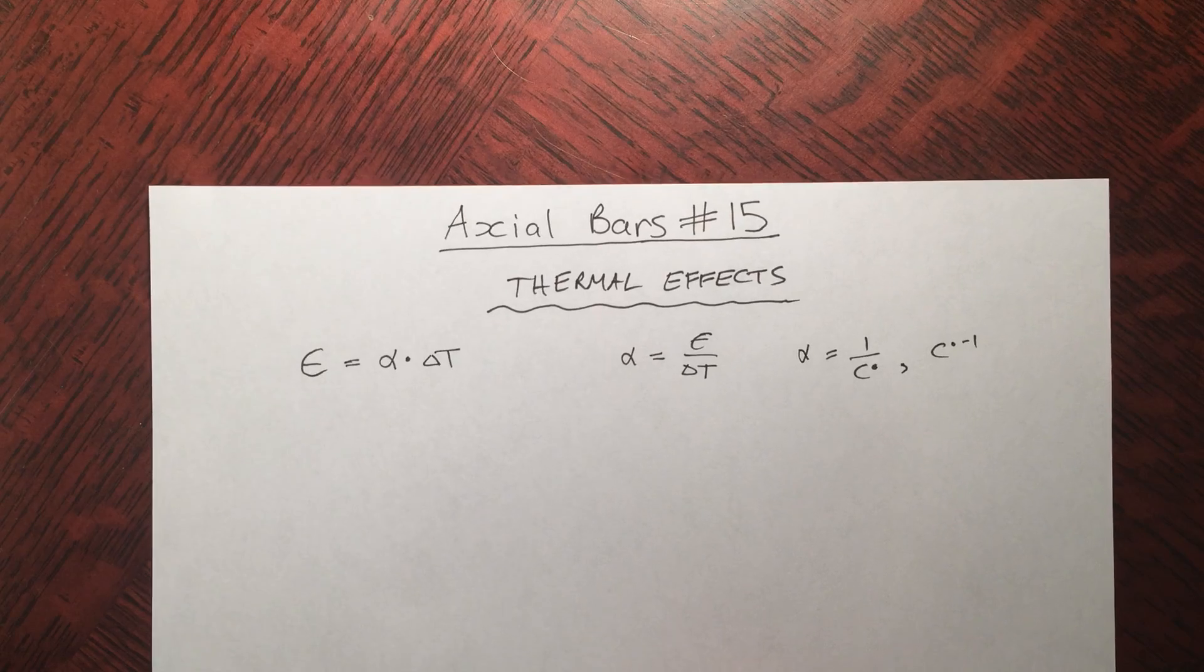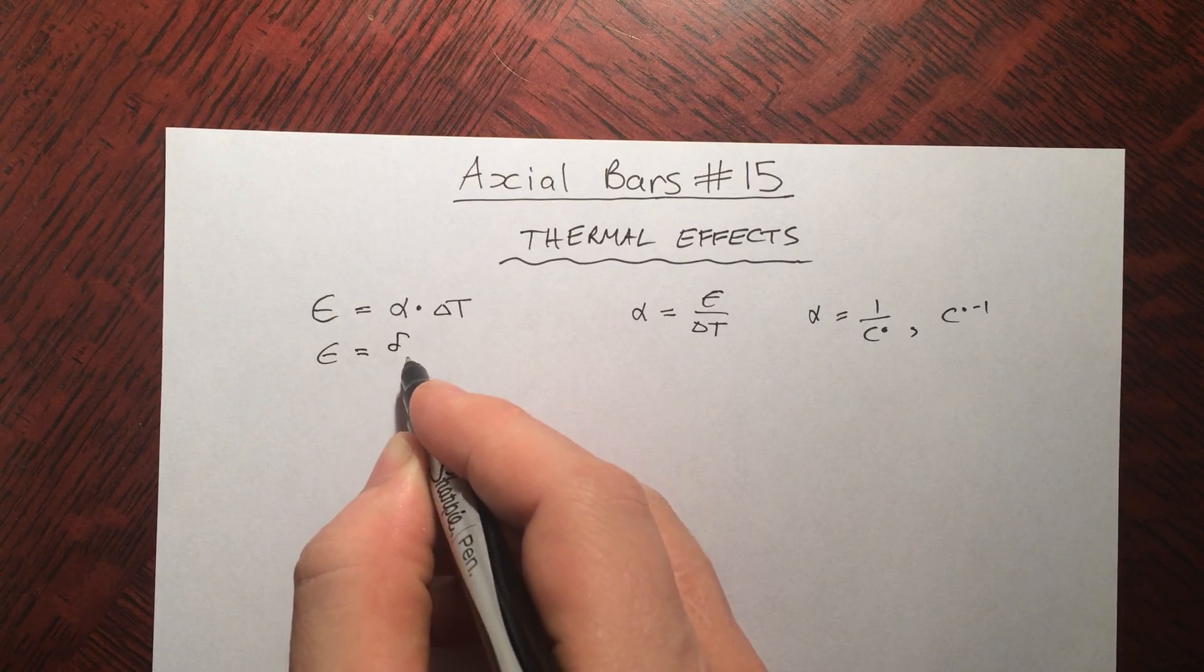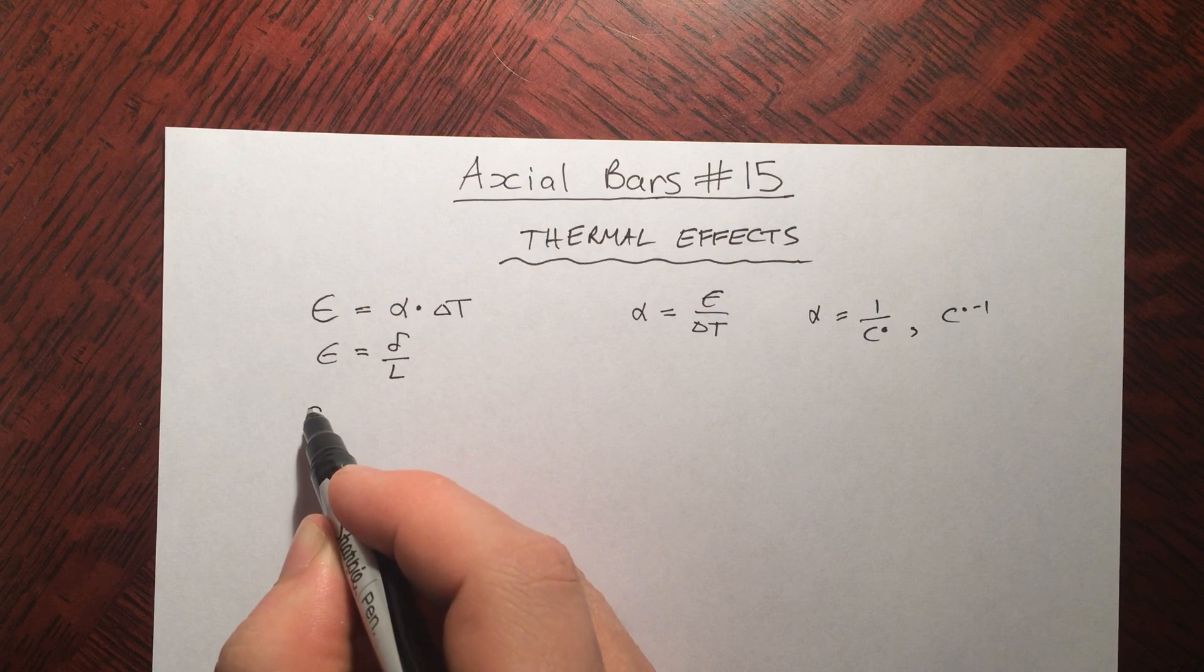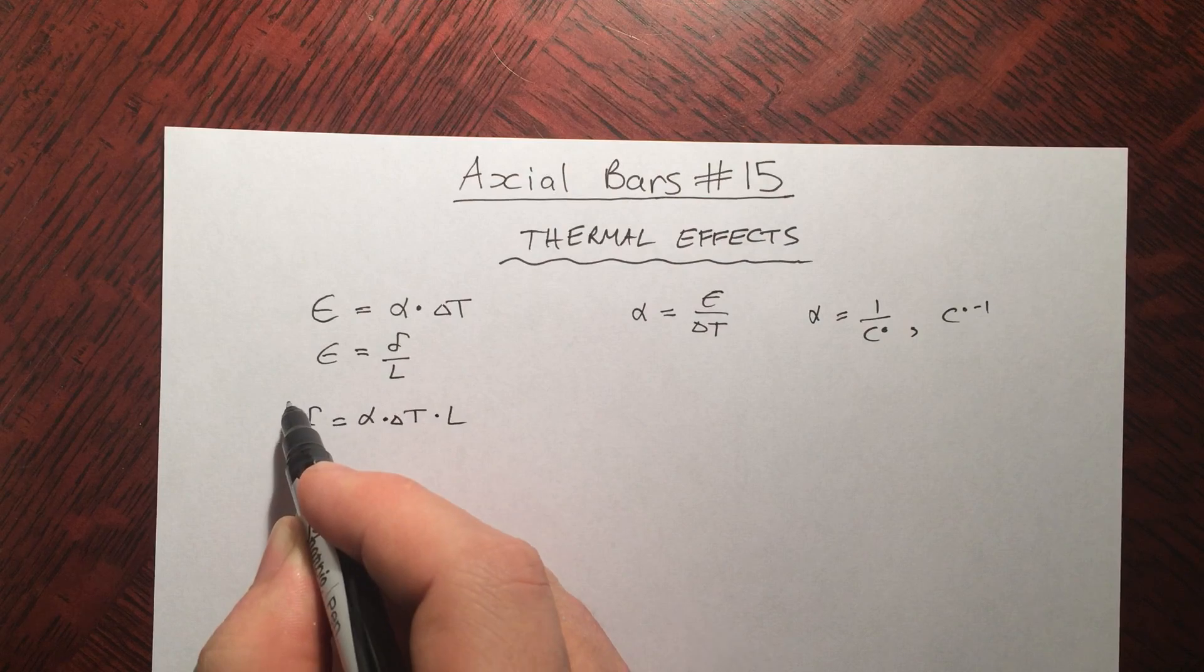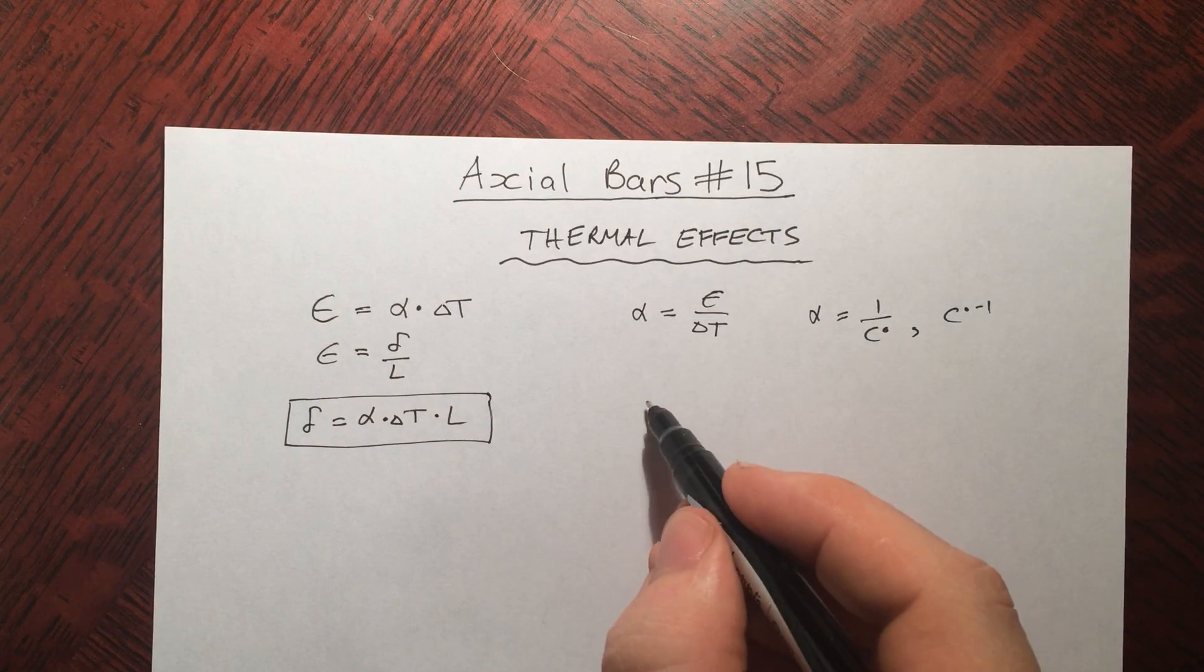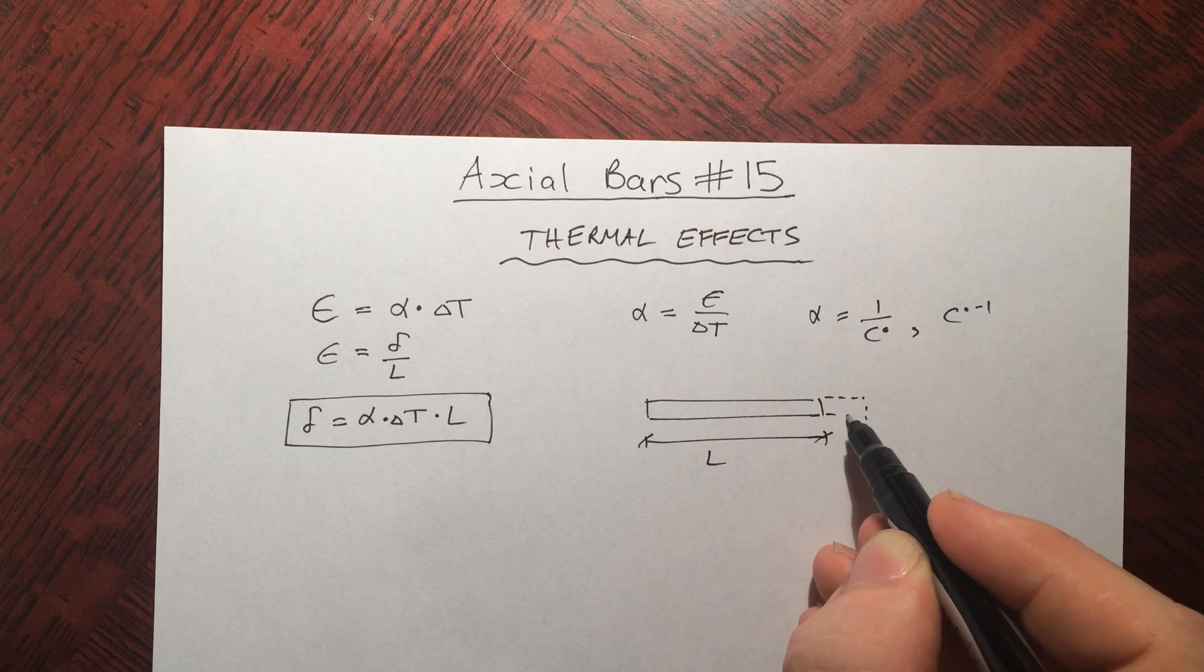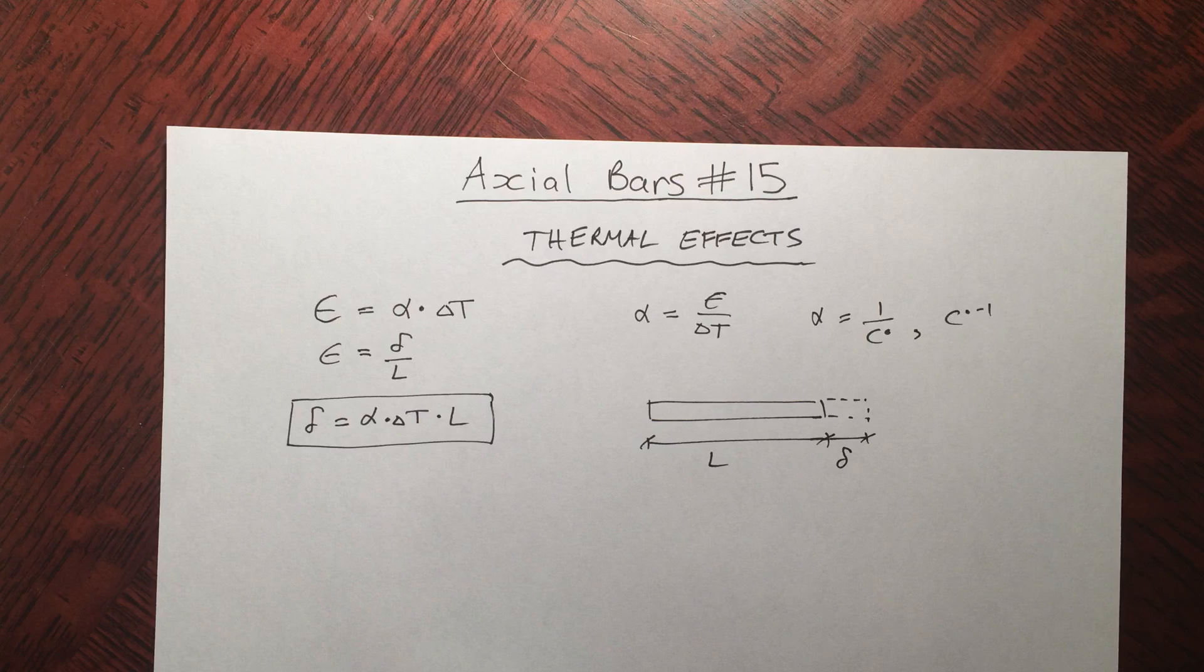Now we know that strain is equal to delta over L, so the amount by which it's gotten bigger over the initial length. Substituting this into there, we get delta equals alpha delta T times L. This is the equation we want to talk about. We have a length of bar, it's L long, and it's getting bigger by delta.